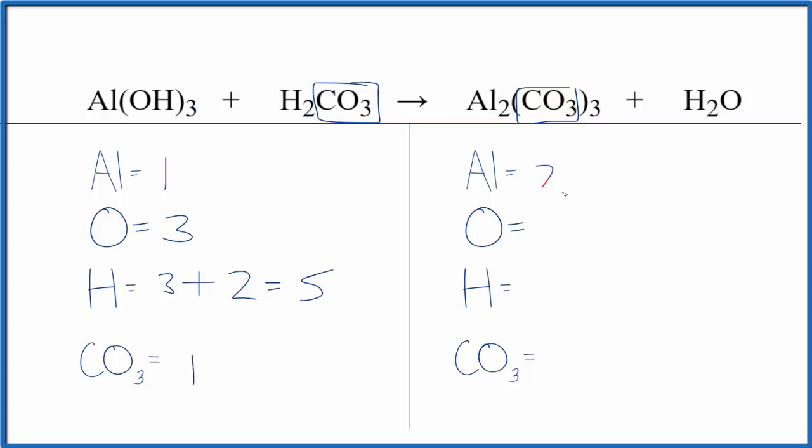Product side, we have two aluminums, one oxygen, two hydrogens, and then three times the one. So we have three carbonate ions.